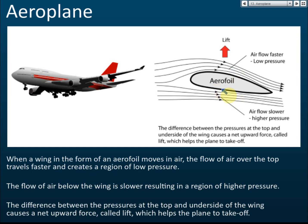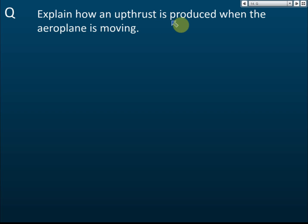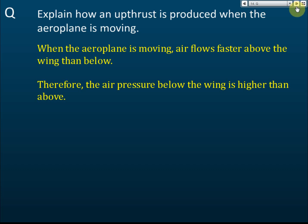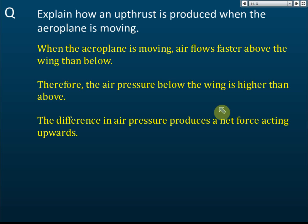The wing shape is called an aerofoil. The airflow above moves faster because it covers a further distance, while the airflow below moves slower. When the aeroplane is moving, airflow above the wing is faster, producing lower pressure above and higher pressure below. This difference in air pressure produces a net upward force, which is the upthrust.